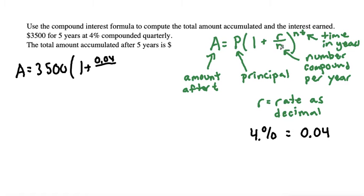Divide that by the number of compounds per year. The problem says we are compounding quarterly, which means four times a year, just like there's four quarters in a dollar. So we'll put four for our N. N repeats in the exponent, so four again, times the time in years, which is five years.